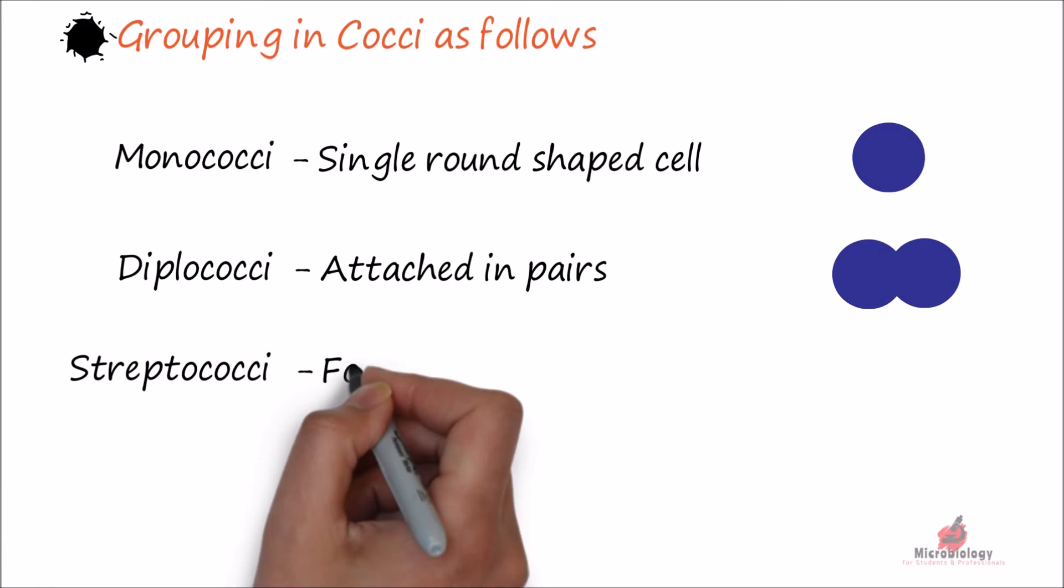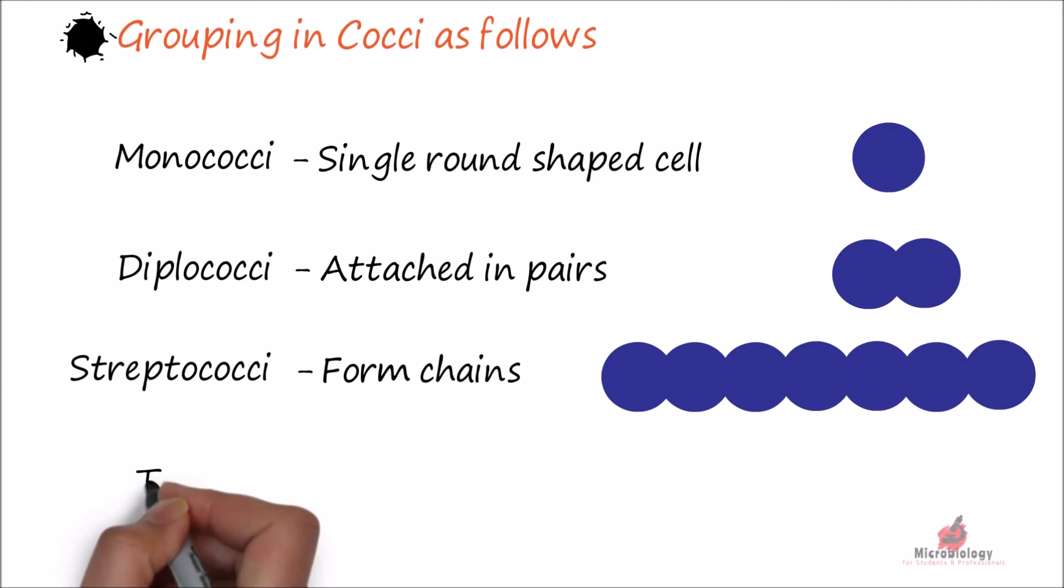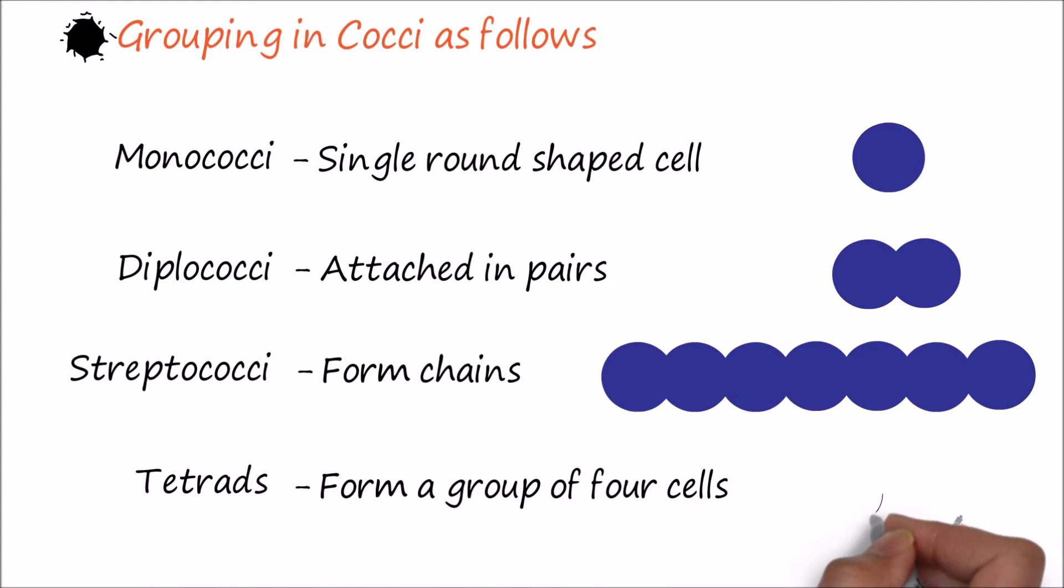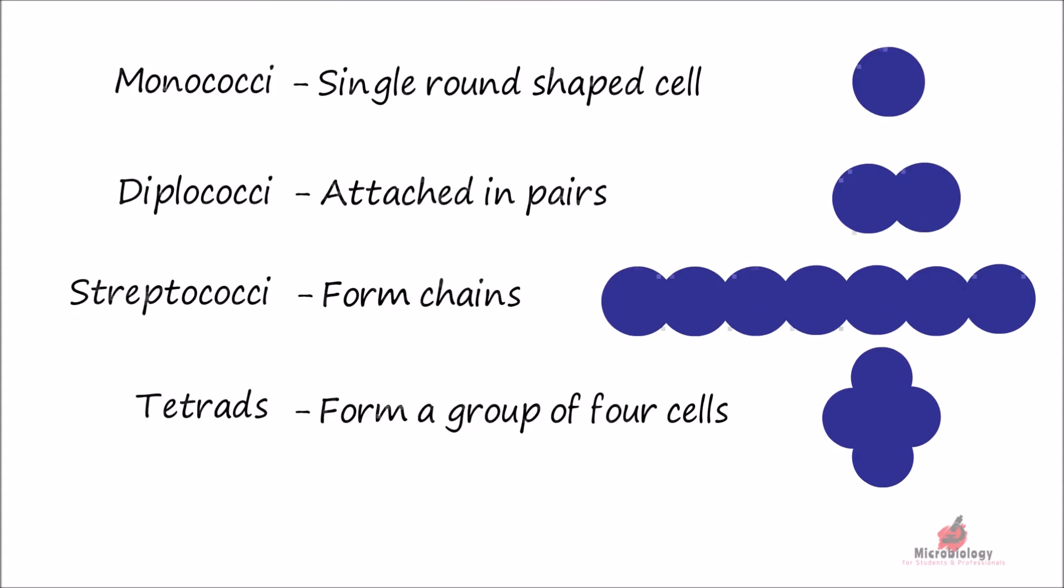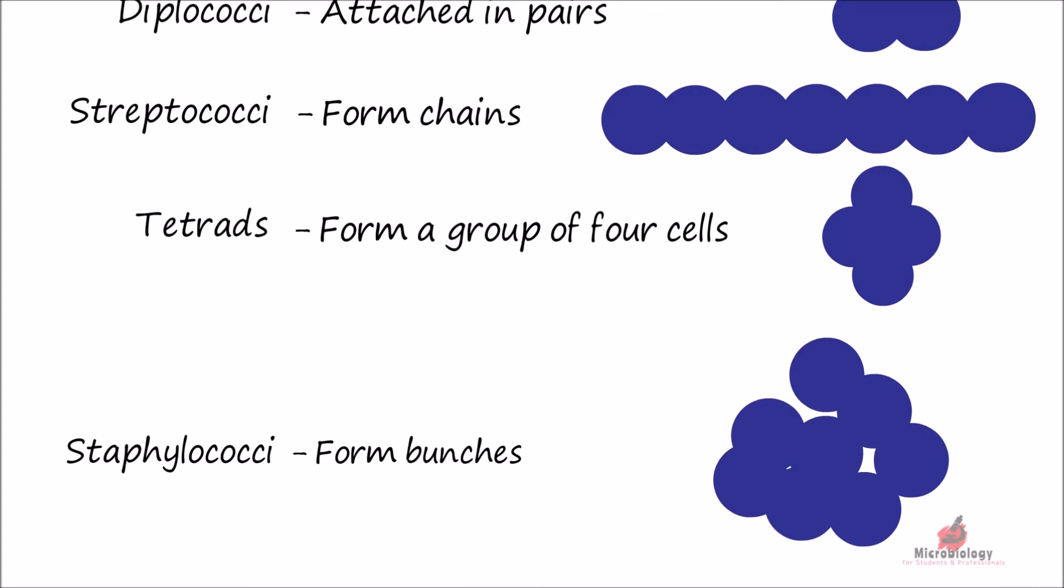Tetrads divide in two planes and form a group of four cells. Staphylococci divide in three planes in an irregular pattern and form bunches.